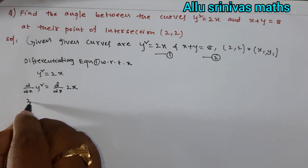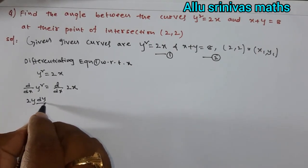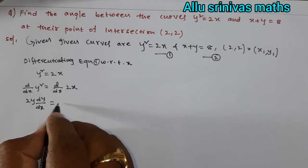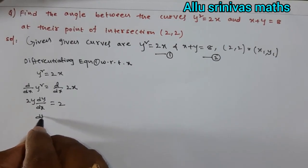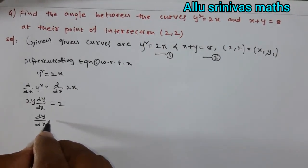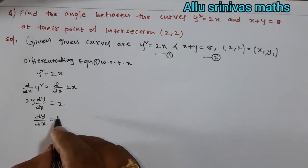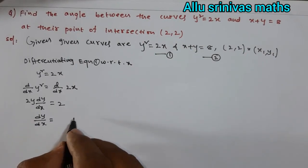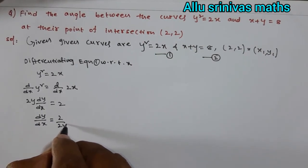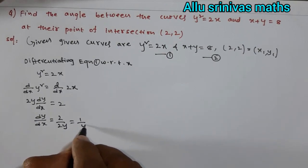We know derivative of y² is 2y dy/dx. Derivative of 2x is 2. We need only dy/dx. Bring 2y to right-hand side: 2 / 2y = 1/y.